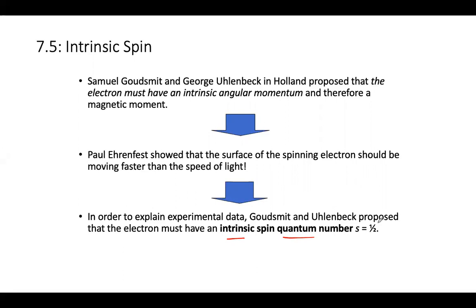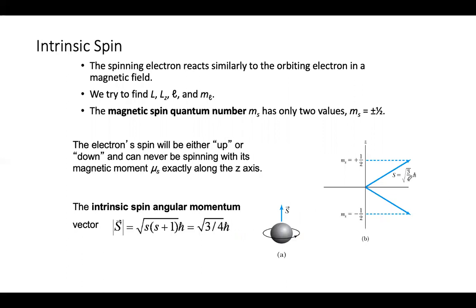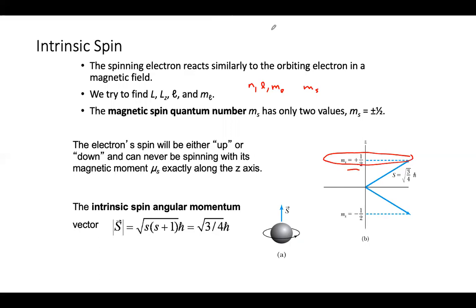That's about all I want to say. The picture shows the two spins precessing. This adds a spin quantum number to n, l, and m_l. Have a great weekend, and I'll set up office hours later.